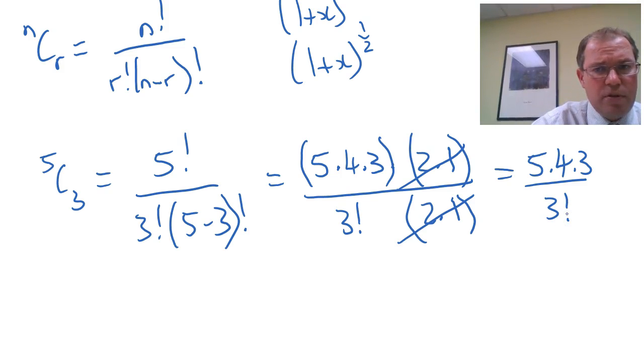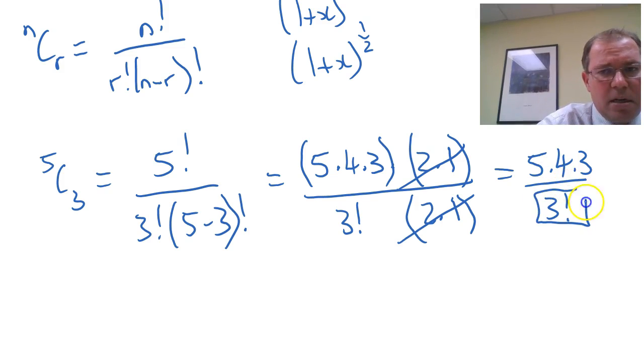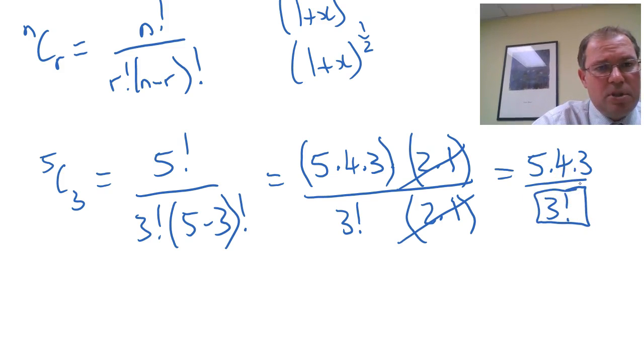Notice that 5 choose 3 has 3 factorial on the denominator and 5 times 4 times 3, 3 numbers on the numerator. So 3 numbers on the numerator, 3 factorial on the denominator.